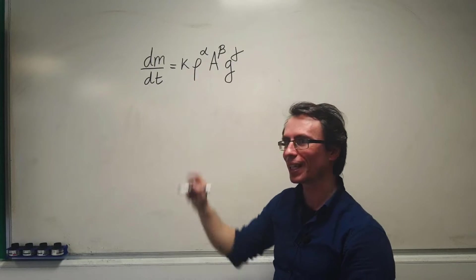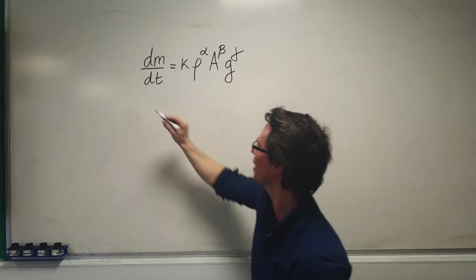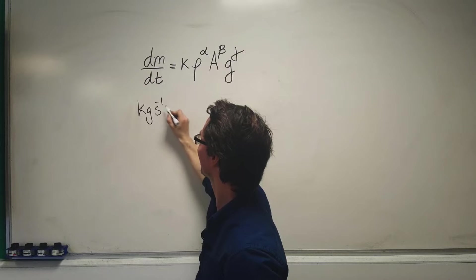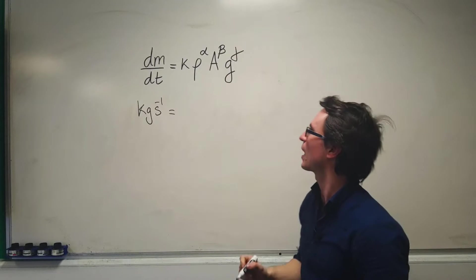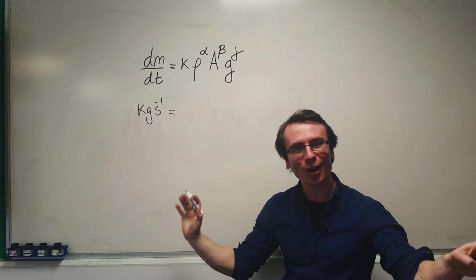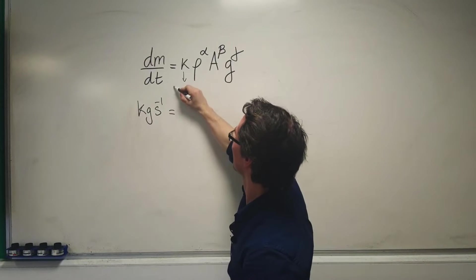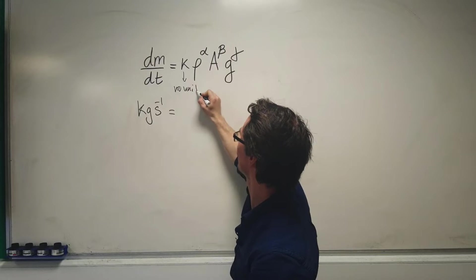The units on the left-hand side, dm/dt, will be kilograms per second in SI units. K is a dimensionless constant, so it has no units or dimensions.